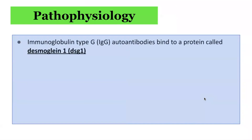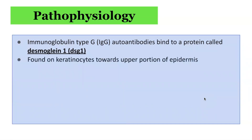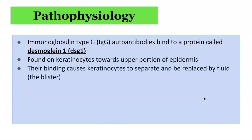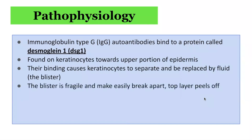In terms of pathophysiology, Pemphigus foliaceus produces IgG autoantibodies which target Desmoglein 1, or DSG1. DSG1 is found on keratinocytes towards the upper part of the epidermis, and binding of the autoantibodies causes these keratinocytes to separate, with fluid replacing them and creating a blister on the superficial surface of the skin. Because the blister is superficial, it is fragile and susceptible to trauma, meaning it can be easily broken apart when the top layer peels off.